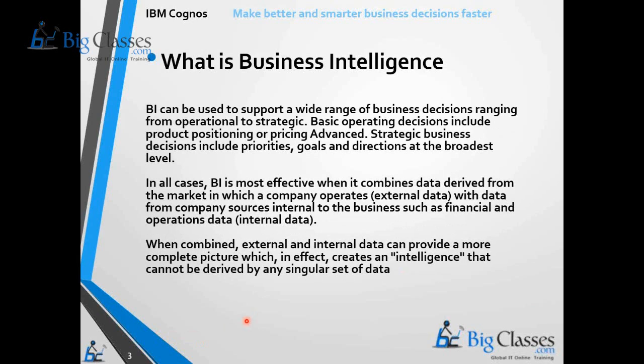BI can be used to support a wide range of business decisions ranging from operational to strategic. Basic operating decisions include product positioning or pricing; advanced strategic business decisions include priorities, goals, and directions at the broadest level. In all cases, BI is most effective when it combines data derived from the market — external data, such as Nielsen data — with data from company sources internal to the business, such as financial and operational data. When combined, external and internal data can provide a more complete picture, creating intelligence that cannot be delivered by any single set of data.